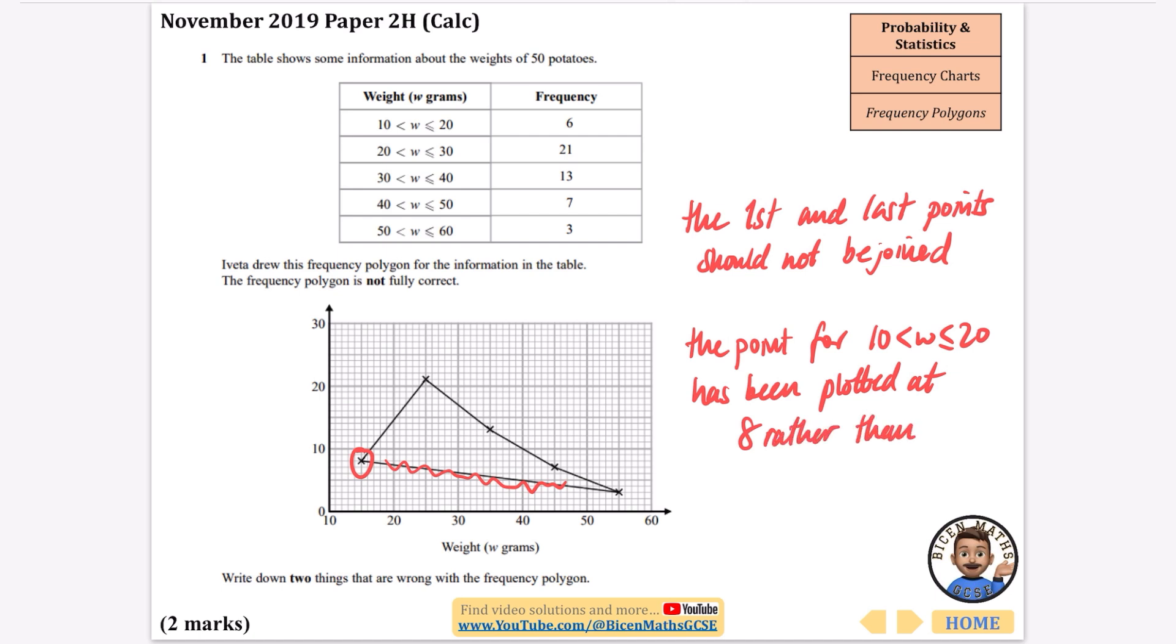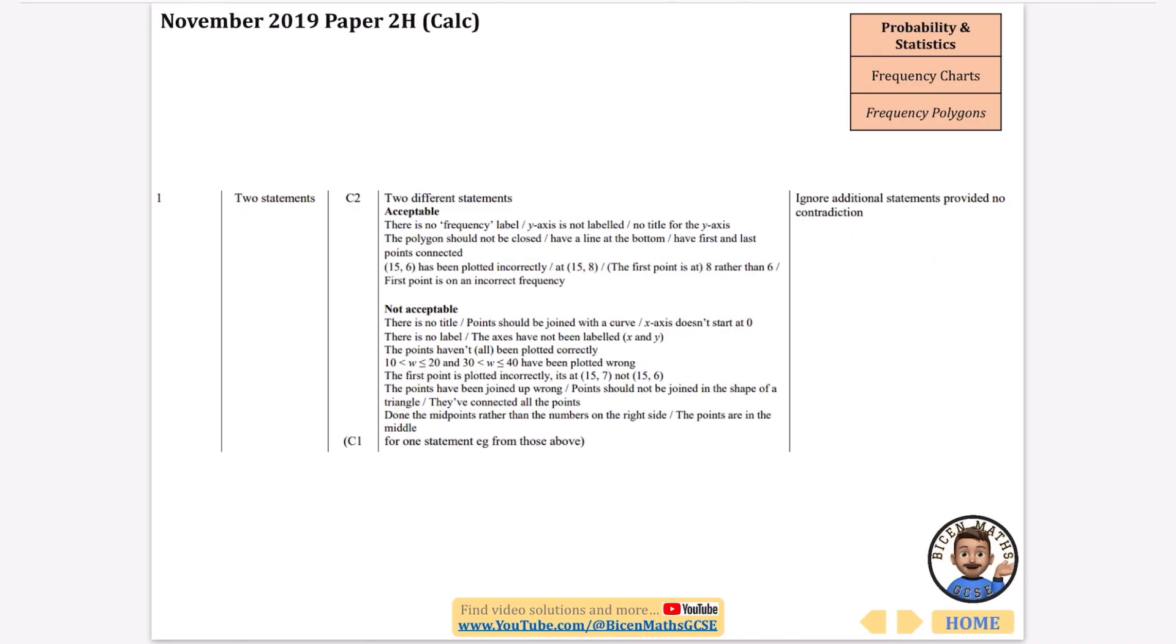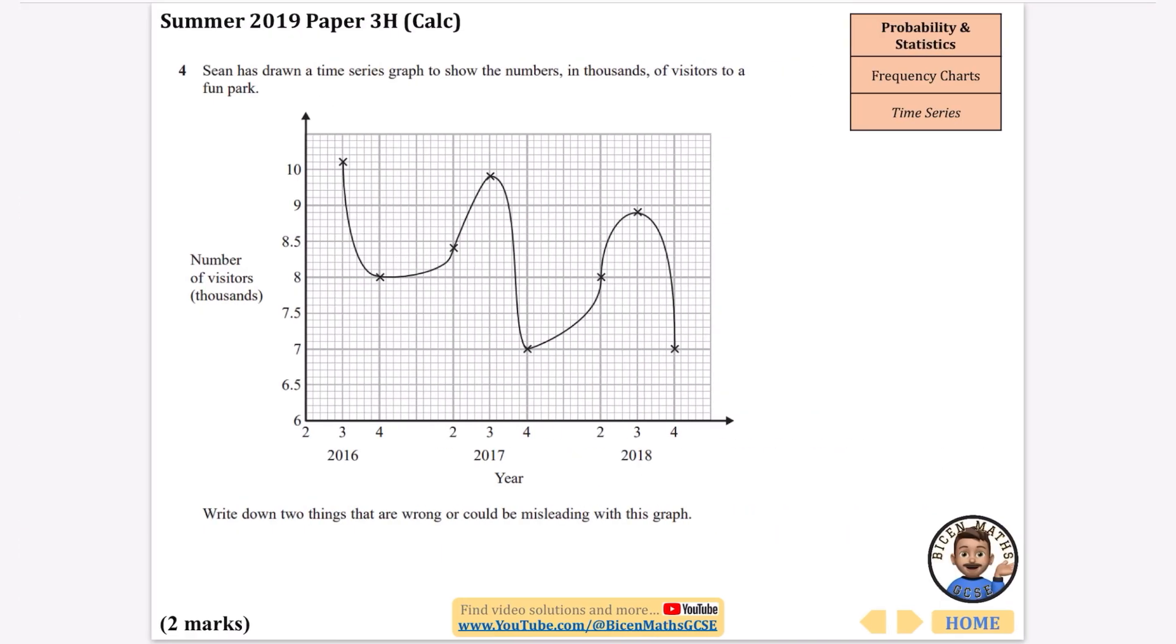Now there is one more thing I've just spotted, there's no label over here, this should say frequency. But I would say the bottom and this are probably the things I would go for, so let me just put little bullet points to show these are my two separate things. Let's see if we've got them right, it says the first, let's have a look, there is no frequency label on the y-axis, okay the polygon should not be closed and that first point has been plotted incorrectly, so we got that one right.